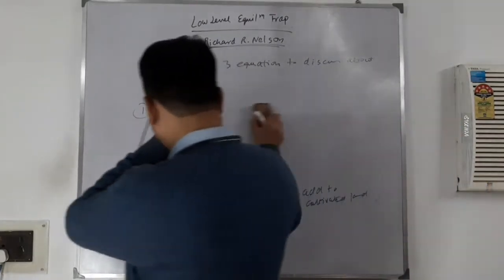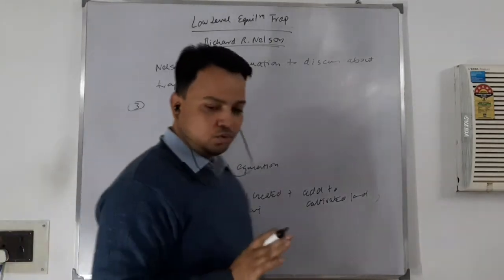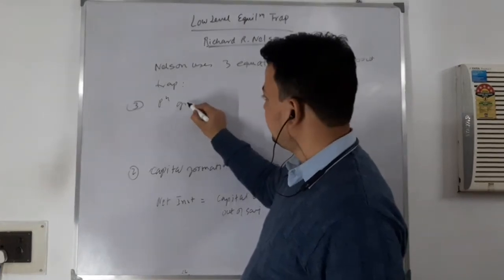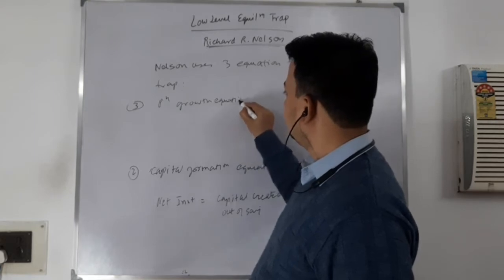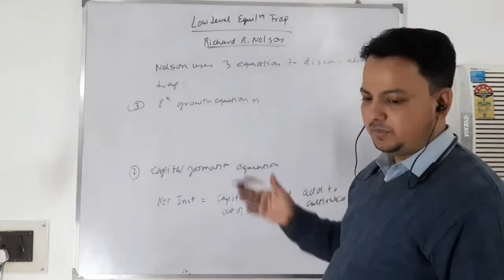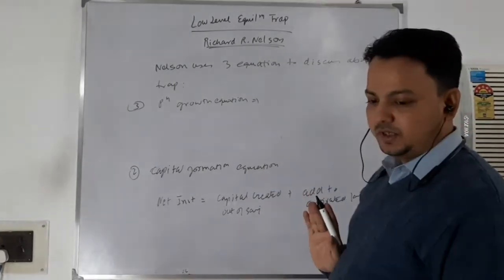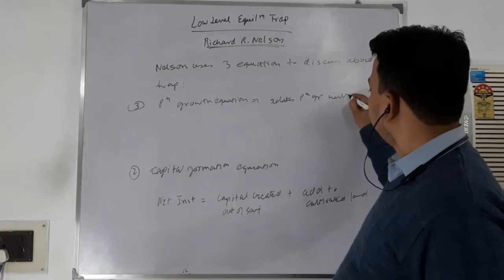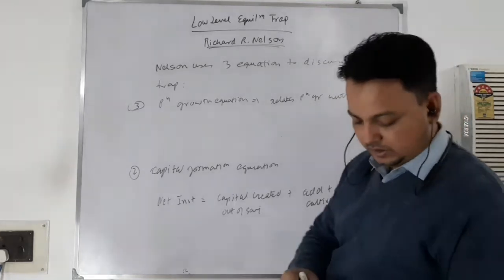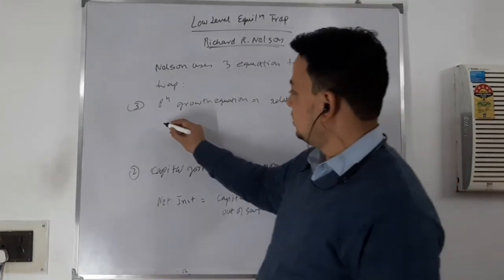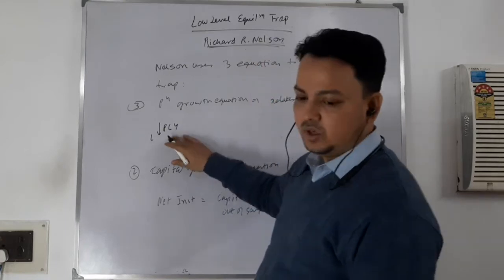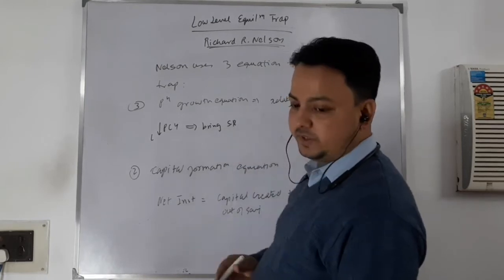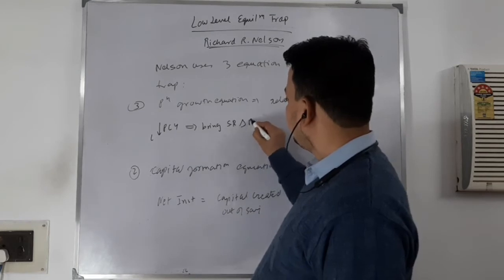Third is the population growth equation. Here, net population growth is related to per capita income. For low levels of per capita income, it will bring short-term or temporary changes in population growth. Suppose your per capita income is at subsistence level — it can be below or a little above subsistence level, which is the minimum requirement to survive. When per capita income is very low, it will bring short-term changes in population growth due to change in death rate.